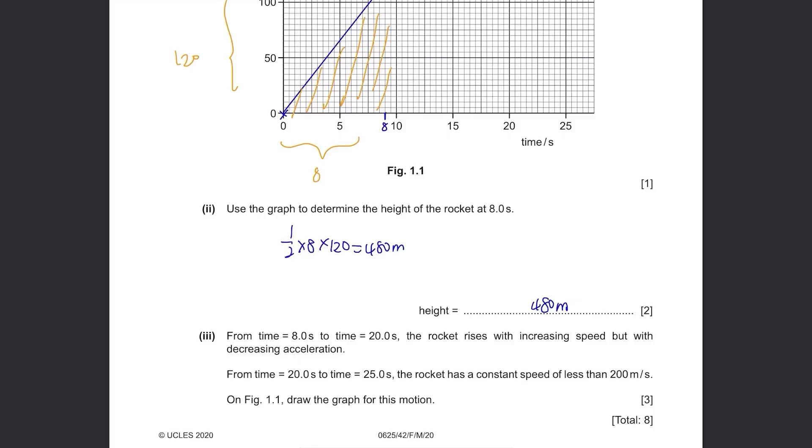From time 8 seconds to time 20 seconds, the rocket rises with increasing speed but with decreasing acceleration. From time 20 seconds to time 25 seconds, the rocket has constant speed of less than 200 meters per second. On figure 1.1, draw the graph for this motion. Let's do it one by one. I know a lot of students struggle with drawing the speed-time graph, but it's okay, you got this.